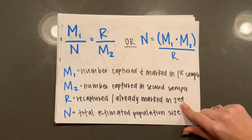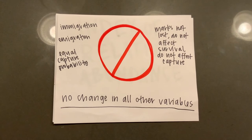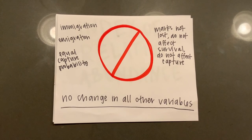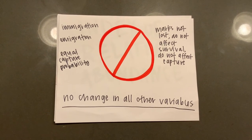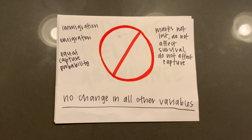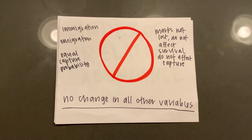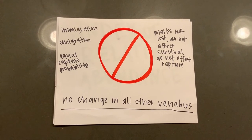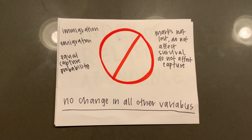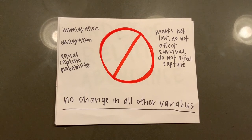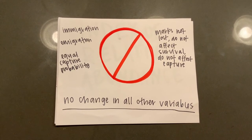Assumptions for this method to be useful are that you are sampling the whole population equally, there is no immigration or emigration occurring in the population, all individuals have equal capture probability, and the marks given to individuals are not lost, do not affect survival, and do not affect capture probability.